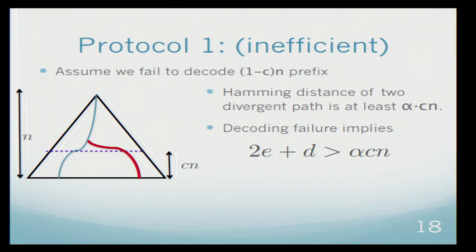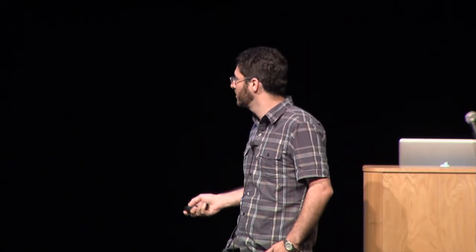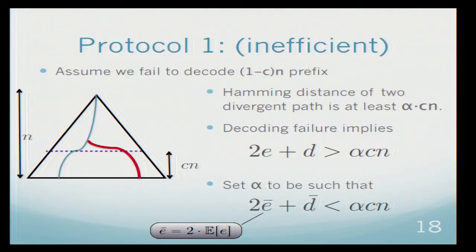We don't want this to happen. What we can do is choose the parameter alpha so this will not happen. That's exactly what we do. We choose alpha to be larger than twice E bar plus D bar, where E bar is, just to remind you, two times the expectation. So except with negligible probability, the amount of errors will be less than E bar, and this equation will not be satisfied, which means that we will be able to decode more than 1 minus c fraction of the stream.